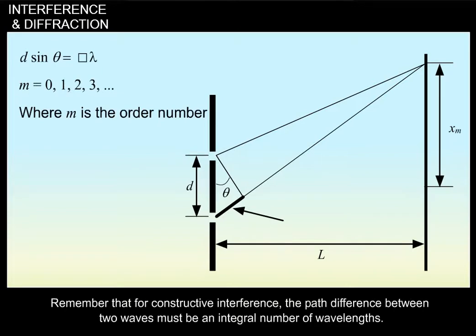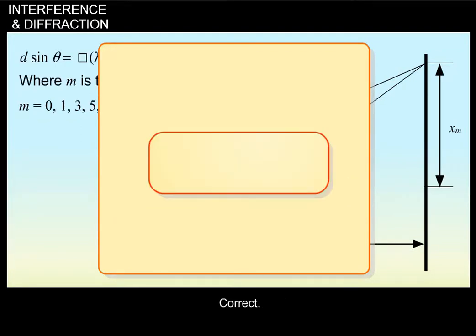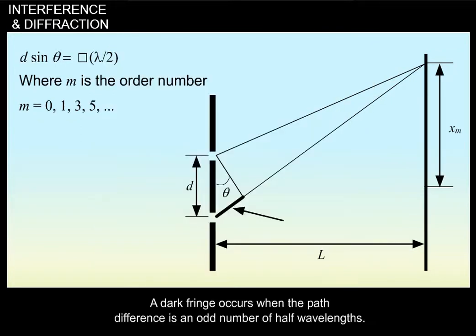Remember that for constructive interference, the path difference between two waves must be an integral number of wavelengths. For what condition does a dark fringe representing destructive interference appear on the screen? Correct. A dark fringe occurs when the path difference is an odd number of half wavelengths.